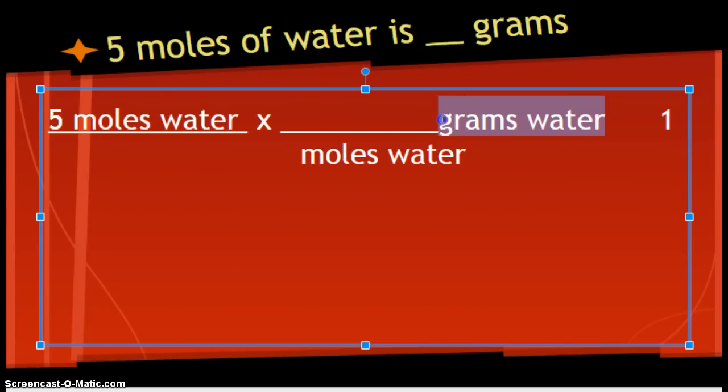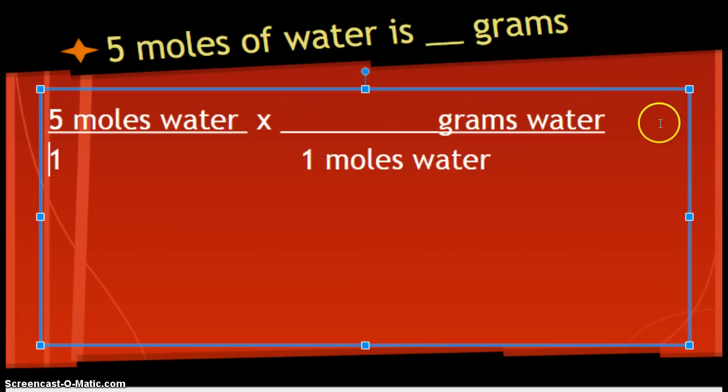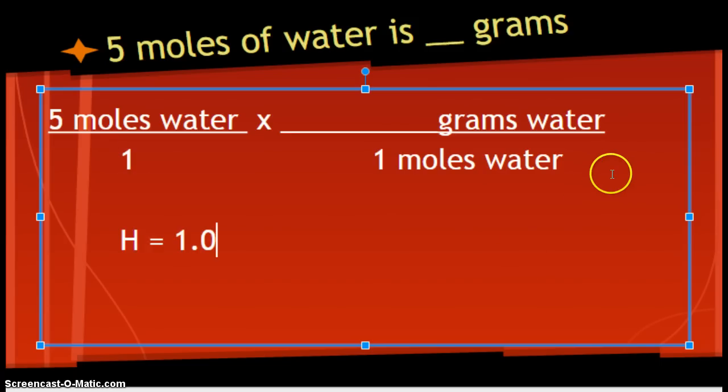Alright, so now we have to figure out how many moles of water equals how many grams. So, one mole is how many grams of water. We'll get that back set up. So, we look at our periodic table. And, how much? 1.01 grams per mole. And, each oxygen is how much? 16.00 grams per mole.